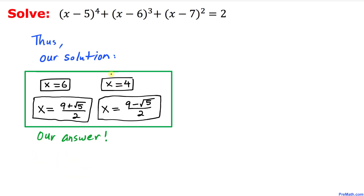Finally, here are our four solutions to this given equation: x equals 6, x equals 4, x equals (9 plus square root of 5) over 2, and x equals (9 minus square root of 5) over 2. That's our final answer. Thanks for watching and please don't forget to subscribe to my channel for more exciting videos.